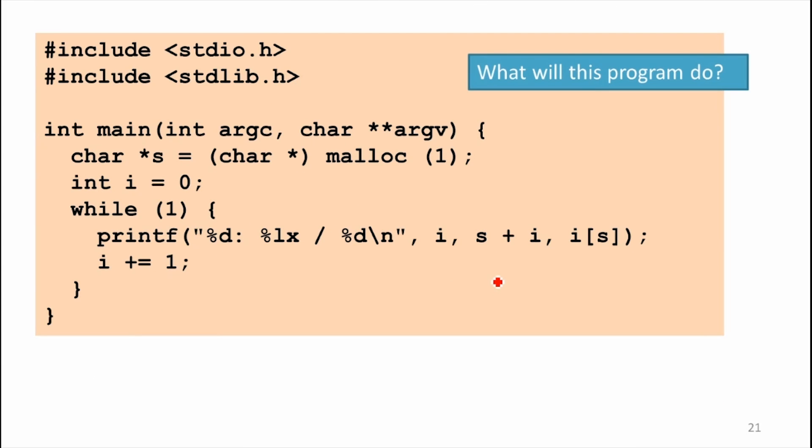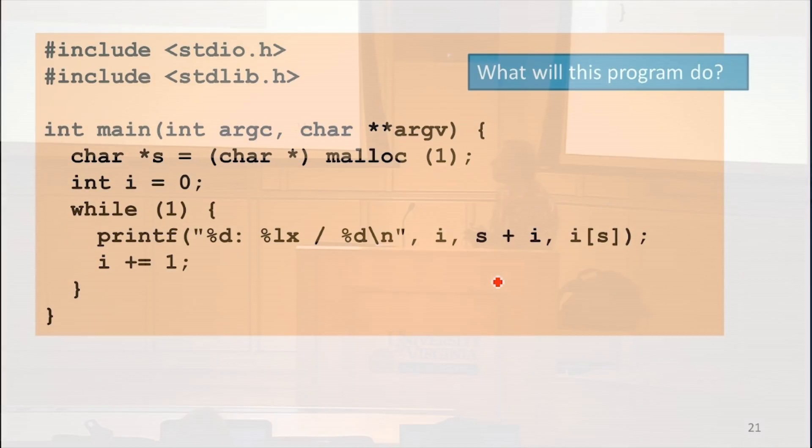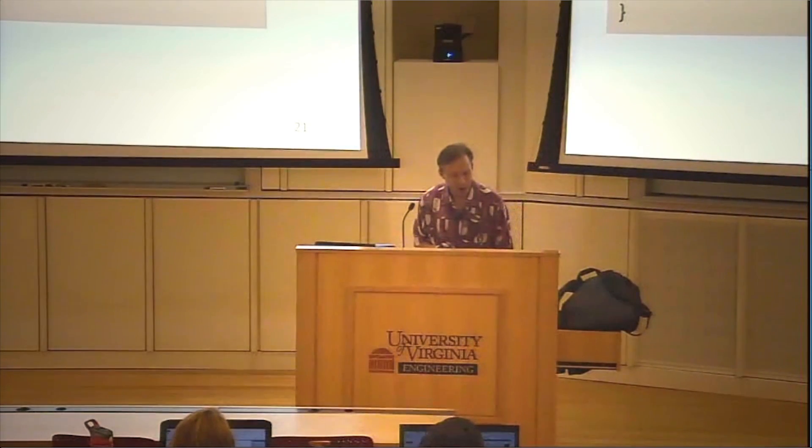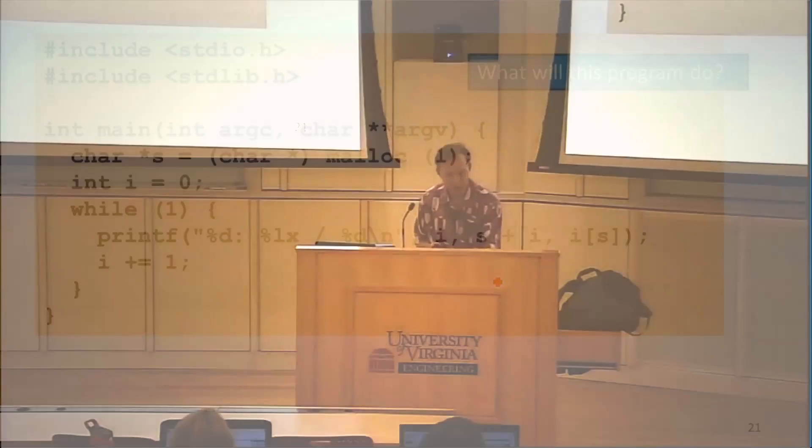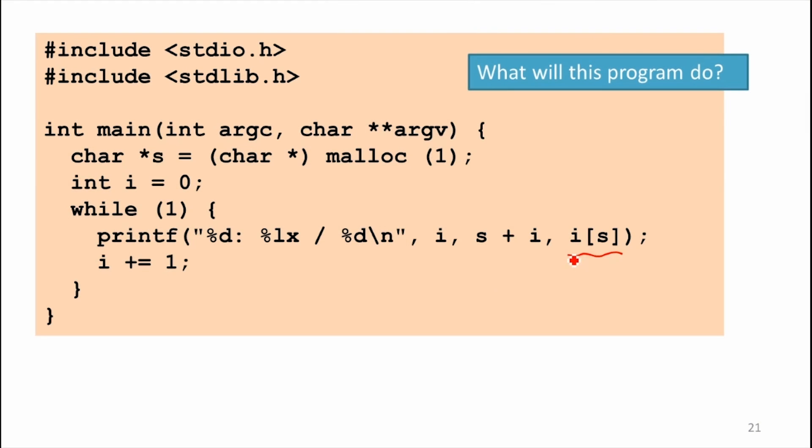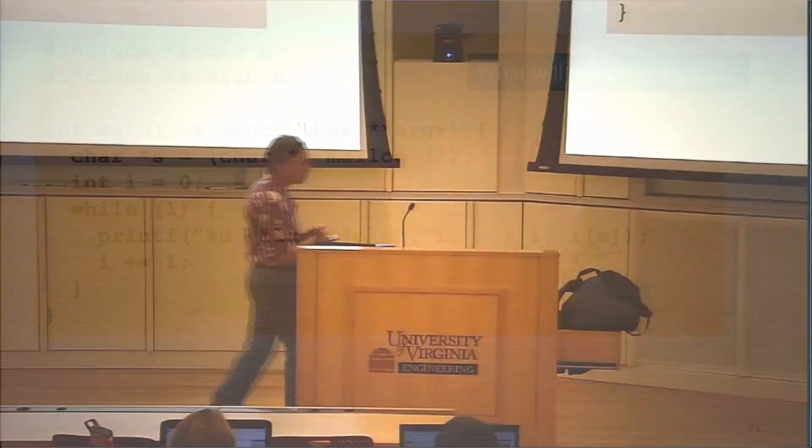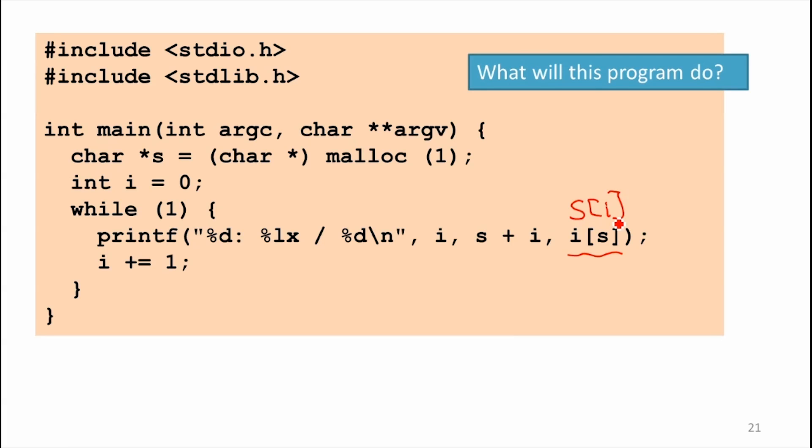This was the program at the end of the last class and on the notes from last class. Did anyone figure out what this program does? So I've changed it a little bit. There are a few things that might be a little puzzling to less experienced C programmers. So what does I bracket S mean? Is that legal C to index off an integer with a string, with a char pointer?